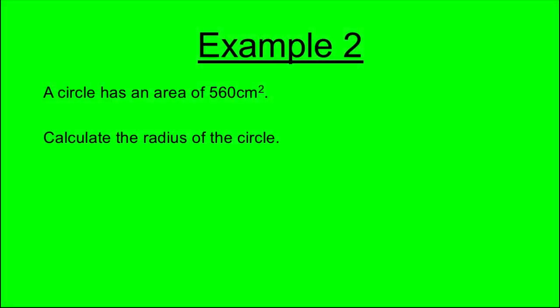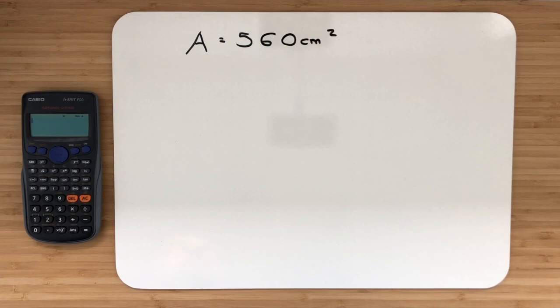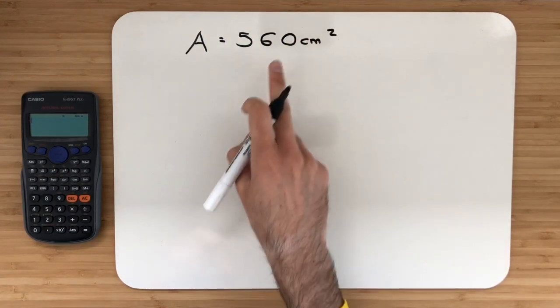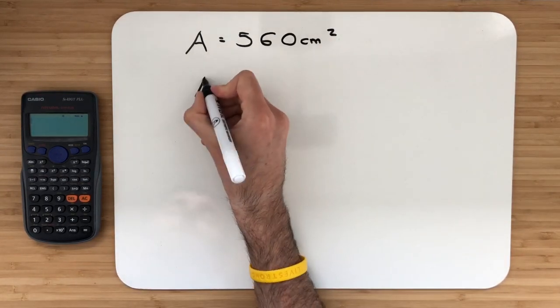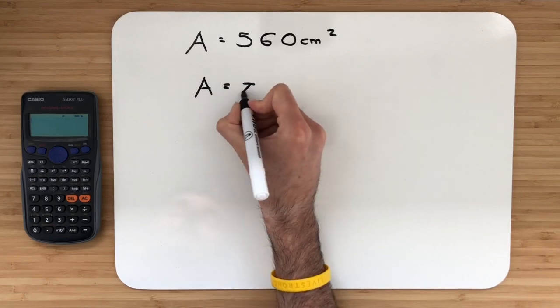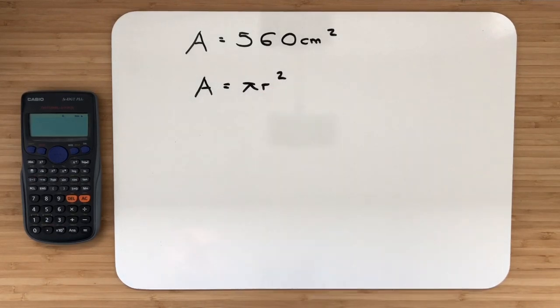Example 2. A circle has an area of 560 square centimetres. Calculate the radius of the circle. We're going to calculate the radius of a circle given the area of 560 square centimetres. So as we've been given the area, we're going to work with the area formula, which is A is equal to π r squared.